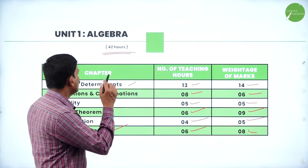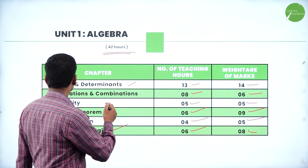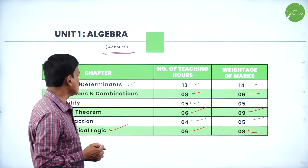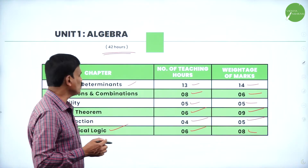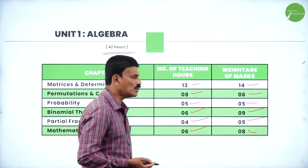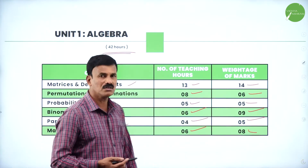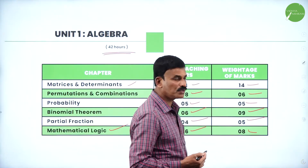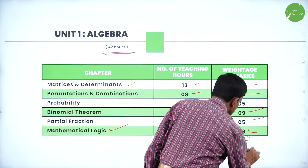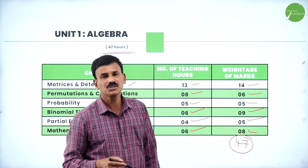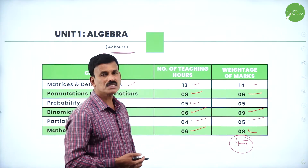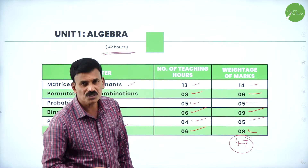This is a very important unit. In Algebra you will get 14 marks from Matrices and Determinants, 6 marks from Permutations and Combinations, 5 marks from Probability, 9 marks from Binomial Theorem, 5 marks from Partial Fractions, and 8 marks from Mathematical Logic. Totally you will get 47 marks from Part 1 Algebra — almost 50% of the marks will be covered in this unit itself.